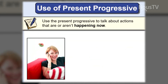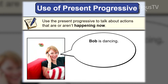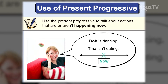Use of the present progressive: how do we use the present progressive? In general, we use the present progressive to talk about actions that are or aren't happening now, at the moment we are talking. For example: Bob is dancing. Tina isn't eating. We use 'is dancing' and 'isn't eating' to show actions happening now.